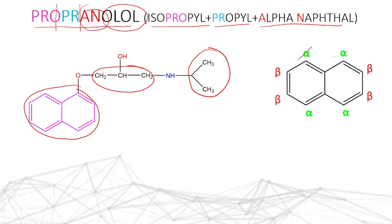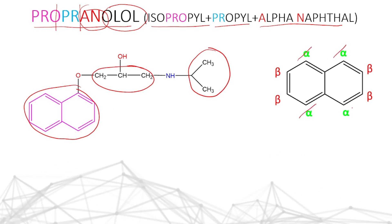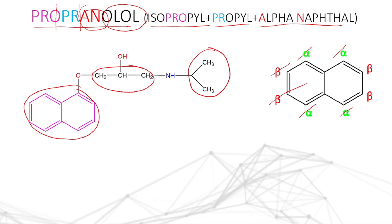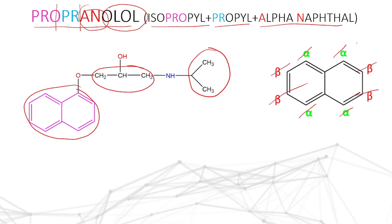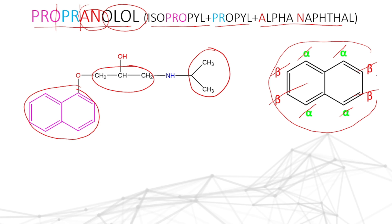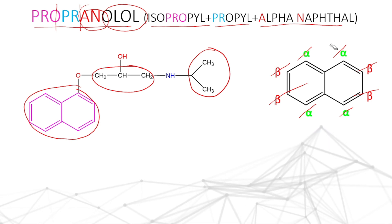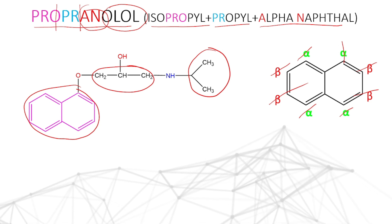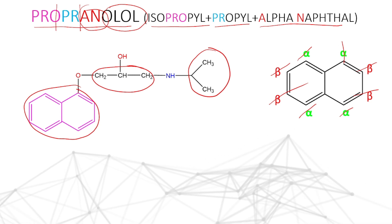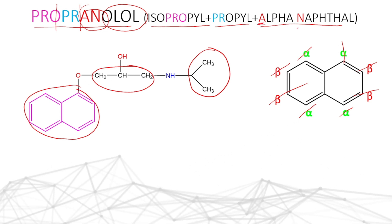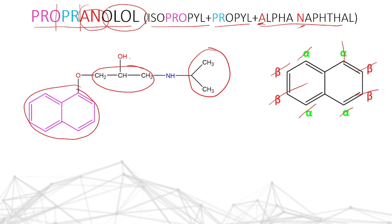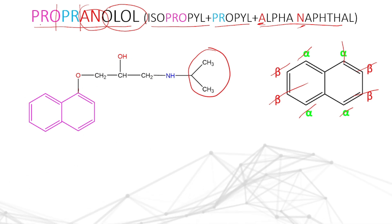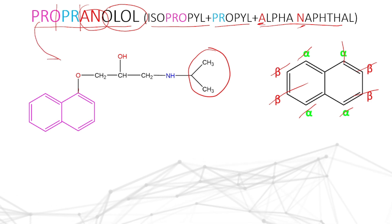When it comes to naphthalene, positions one, two, three, four — four alpha positions are there, and four beta positions are there. This is the Greek numbering for naphthalene. So this alpha position is substituted, hence we are calling it alpha AN — alpha naphthyl. This is the propranolol structure, and how we need to write the structure from the generic name.